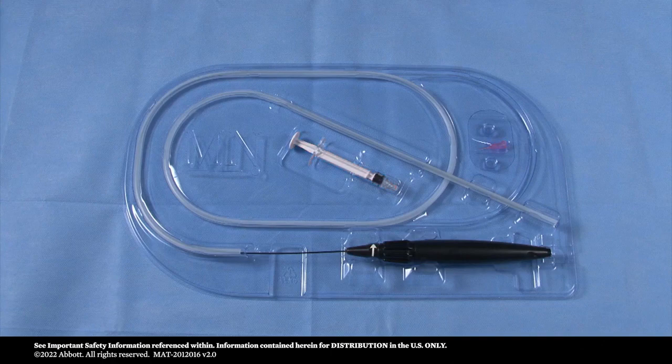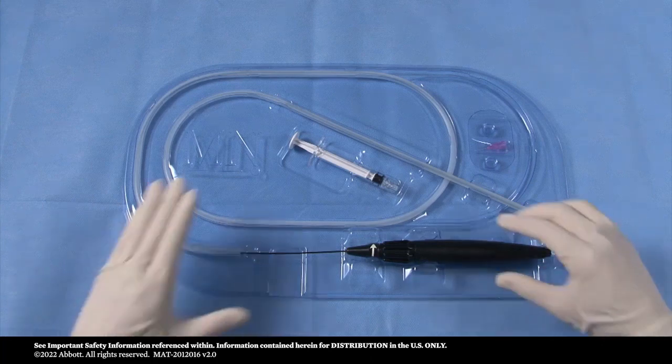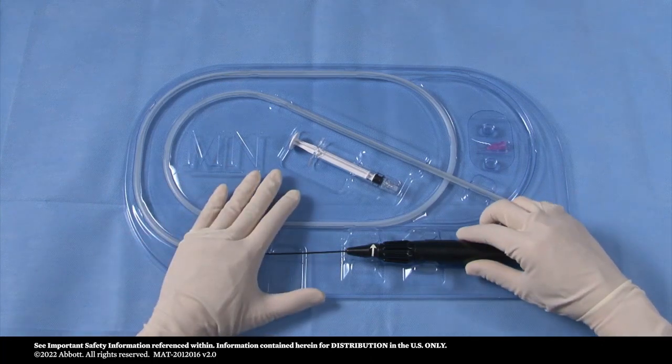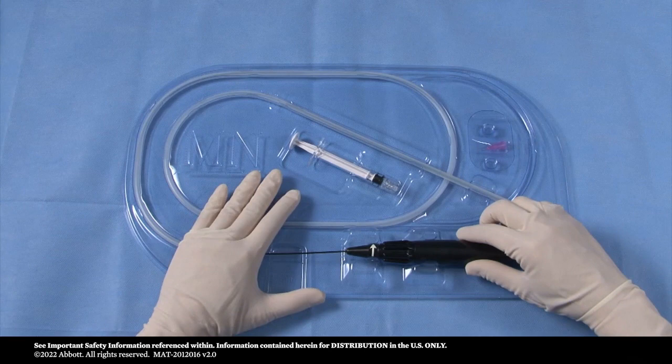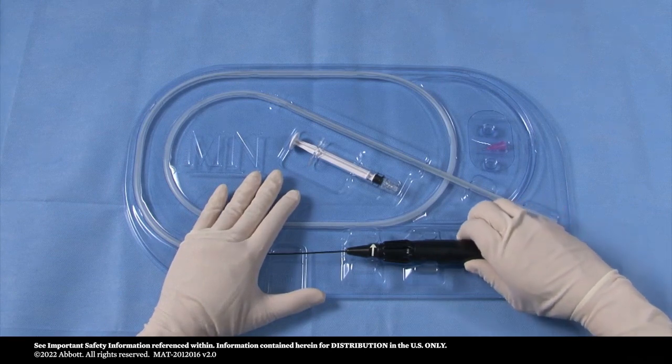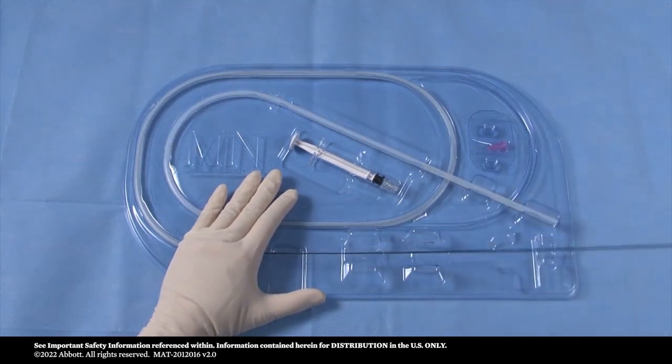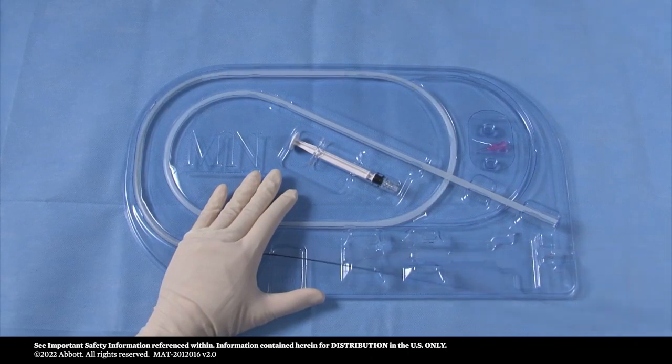To prepare the Exact Carotid Stent for use, remove the device from its protective hoop by grasping the handle in the position shown. Lift it up to release it from the tray and pull the device gently out of the hoop.